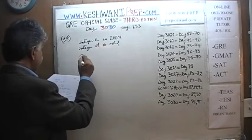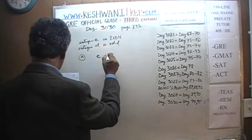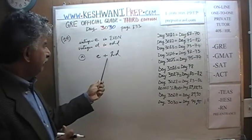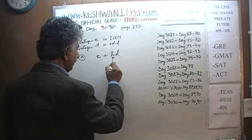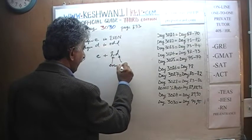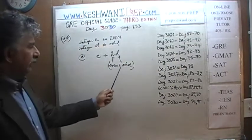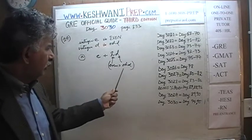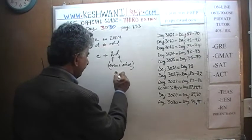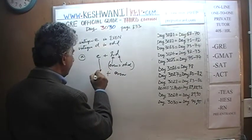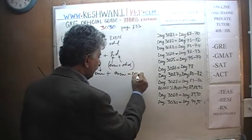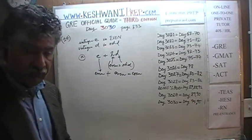Part A says: E + 2×D, an even quantity plus 2 times an odd quantity. We know 2 is even, and the product of even times odd is even — for example, 2 times 3 gives 6. Then we add even to even: even plus even is even. For example, 2 plus 4 is 6. The answer is even.